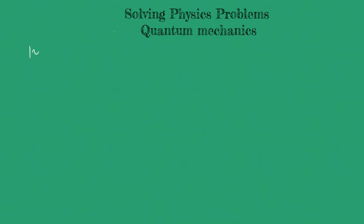Let's consider the following quantum state: |ψ₁⟩ = (1/√3)|+⟩ + (i√2/√3)|−⟩.